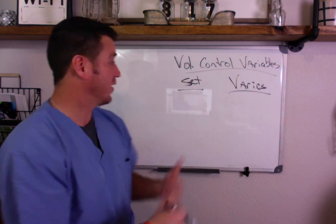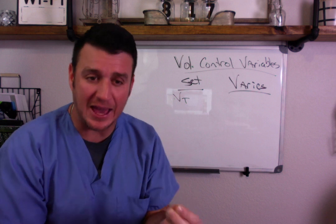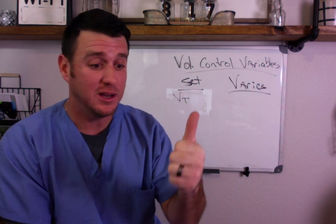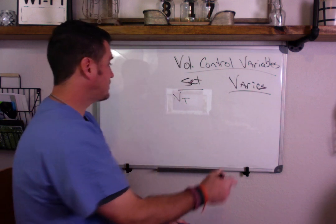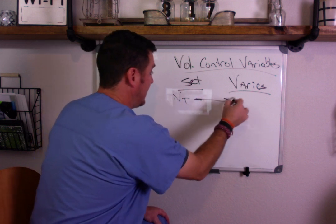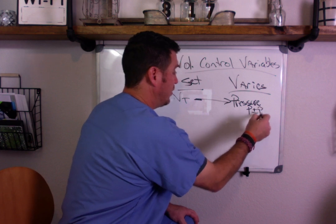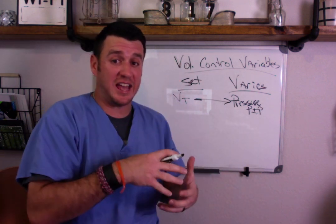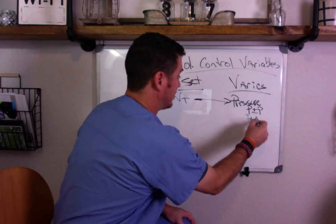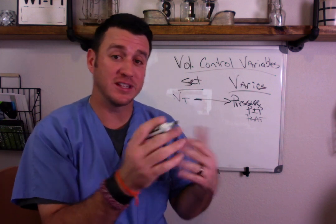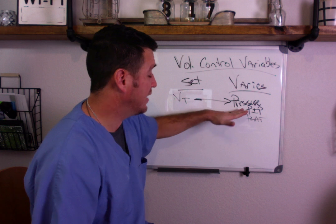The first thing we set is tidal volume — we set it, it does not vary. You have to understand that. When you're in volume control, whether it be SIMV or assist control, the tidal volume is set. Because the tidal volume is set, your pressure will vary. When I say pressure, I mean PIP — peak inspiratory pressure. If tidal volume is set and you're putting in a set volume, your peak inspiratory pressure is going to vary. Also, your plateau pressure will vary based off of the tidal volume that you set.